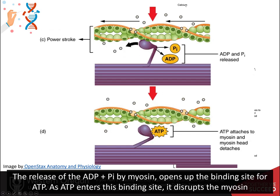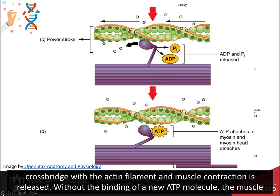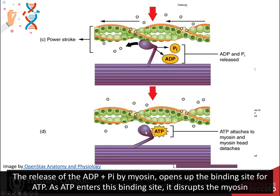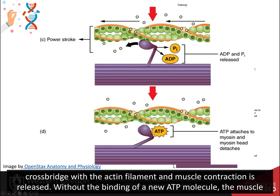The release of ADP and Pi by myosin opens up the binding site for ATP. As ATP enters the binding site, it disrupts the myosin cross-bridge with the actin filament, and muscle contraction is released.